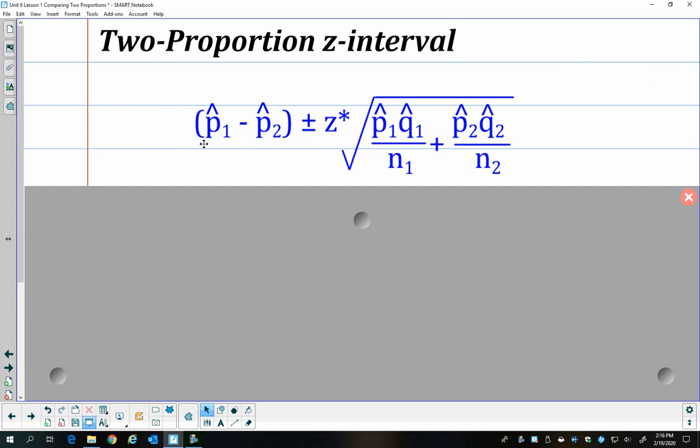So instead of just regular old p-hat over here, we're going to find the difference between the two. Z-star is still the same that we were calculating. And then before, our standard deviation was p-hat times q-hat over n. And so we have to do that for both of our groups and we add those together before we square root.